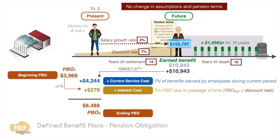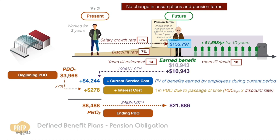To verify, project this amount 14 years in the future to the employee's retirement and we find that this is roughly equivalent to the amount needed at his retirement, the difference due to rounding errors.